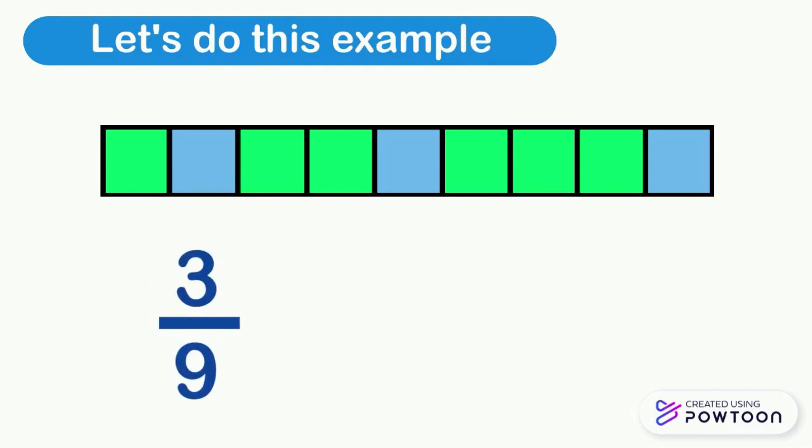So, in the fraction 3 over 9, the number 3 represents the blue colored parts, and it's called the numerator. And the number 9 shows all the parts, and it's called the denominator.